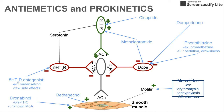There are also macrolides. Macrolides are antibiotics, but they do have some mechanism of increasing gastric motility. Erythromycin is an example. One disadvantage is that they exhibit tachyphylaxis, meaning they decrease in effectiveness the more you use them — diminishing returns for the drug. A common side effect is diarrhea, especially with macrolides. They act by increasing the effect of motilin, which is a GI hormone that promotes gastric motility.